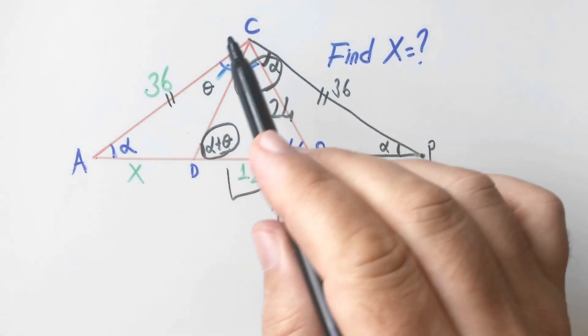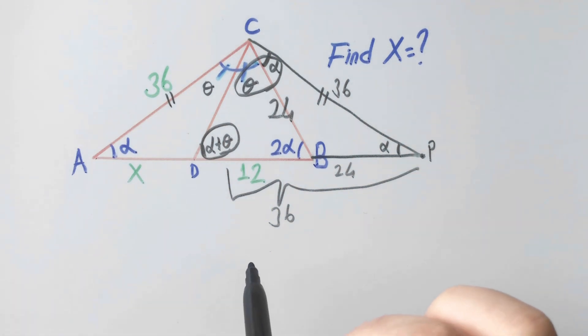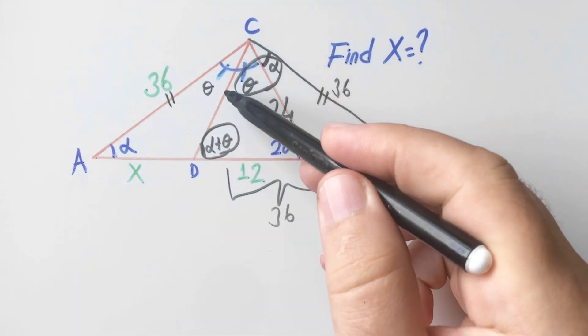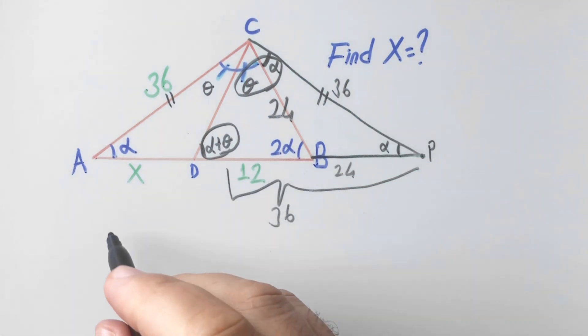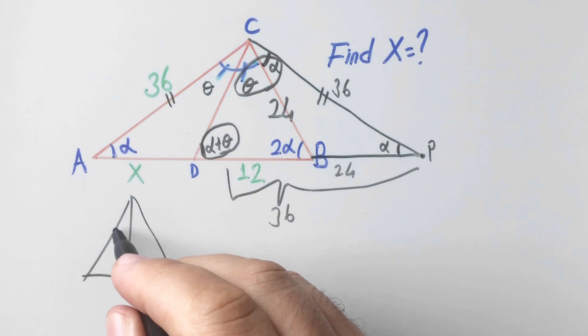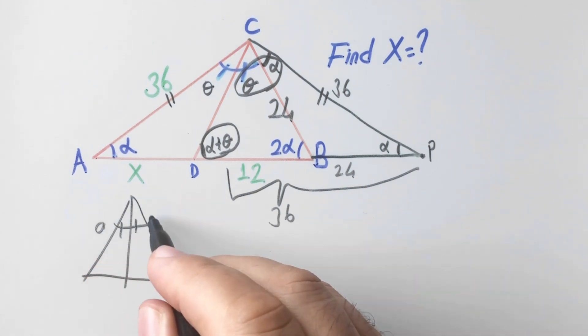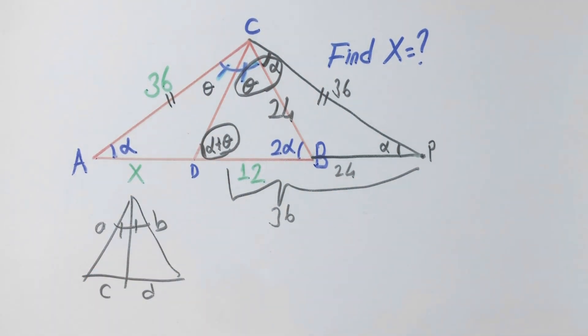If you focus on ACB triangle, we have an angle bisector line. Let's remind you according to angle bisector theorem: the ratio of a over b is equal to c over d. This ratio is very important.